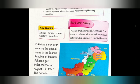Now look at the keywords and learn with me. Read with me: official — sarkari; fertile — zarkhhez; border — sarhad; western — maghribi; populous — zyada aabadiwala.